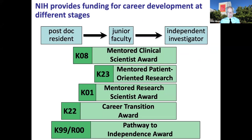The awards we're going to discuss span the part of your career from postdoc and resident through junior faculty to becoming an independent investigator. The K08 is the Mentored Clinical Scientist Award; the K23, also for clinicians, is dedicated to patient-oriented research; the K01 is the Mentored Research Scientist Award — the major K award for basic scientists and non-clinicians. There's an older K22 Career Transition Award, but that's largely been supplanted by the Pathway to Independence Award, the K99R00, which spans from postdoc to becoming an independent investigator.